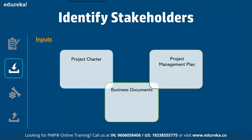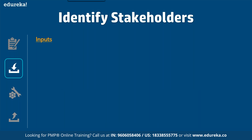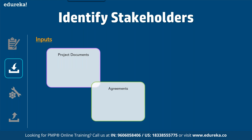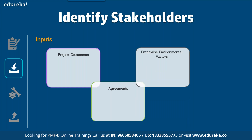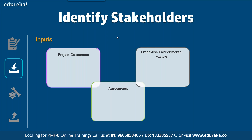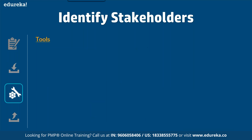We also have three more inputs: project documents, which contain your change log, issue log, and requirement documentation; agreements, which have information on parties that will agree among the project stakeholders; enterprise environmental factors, which include government or industry standards, geographical distribution, organizational culture, political climate, and governance framework; and organizational process assets, which include stakeholder register templates, instructions, and all related information.